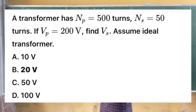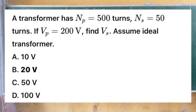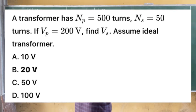Question 5: A transformer has the number of primary turns to be 500 turns and number of secondary turns to be 50 turns. If the primary voltage is 200 volts, find the secondary voltage. Assume ideal transformer. Option A: 10 volts. Option B: 20 volts. Option C: 50 volts. Option D: 100 volts.